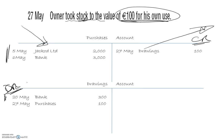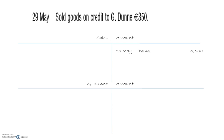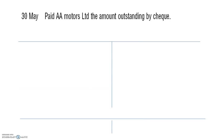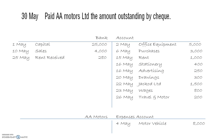Sold goods on credit to D John for 350: credit the sales account and debit the D John account. Finally, paid AA Motors the amount outstanding by cheque — 8,000: credit the bank and debit AA Motors account. That completes all the transactions for the question.